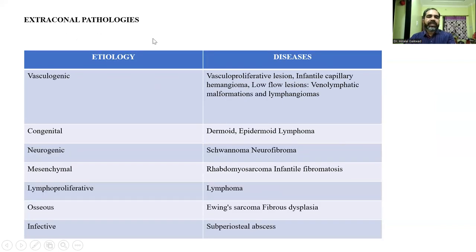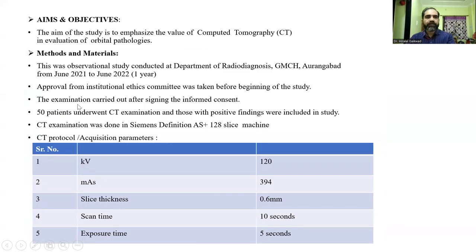Extraconal pathologies affecting the orbit include vasculogenic lesions such as vascular proliferative lesions, congenital lesions like dermoid and epidermoid, neurogenic lesions such as schwannoma and neurofibroma, mesenchymal lesions such as rhabdomyosarcoma and infantile fibromatosis, lymphoproliferative disorders such as lymphoma, and osseous and infective lesions.